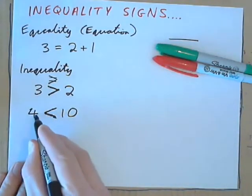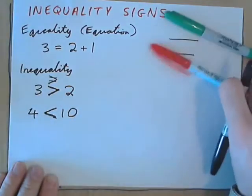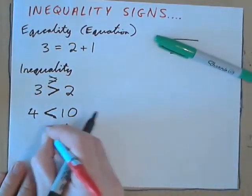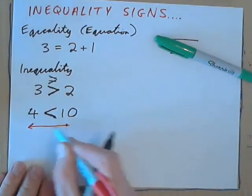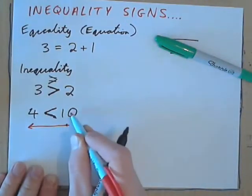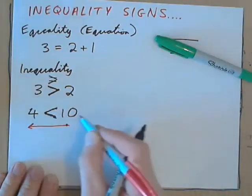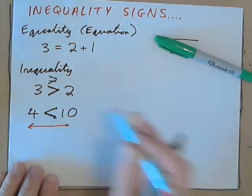4, now it says, obviously, 4 is less than 10. And for fun, we can read it also in this direction. So, put your pen here and read it from right to left. 10 is greater than 4, or 10 is bigger than 4, right?